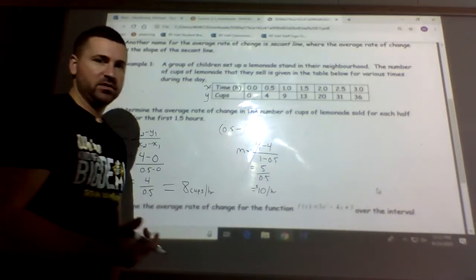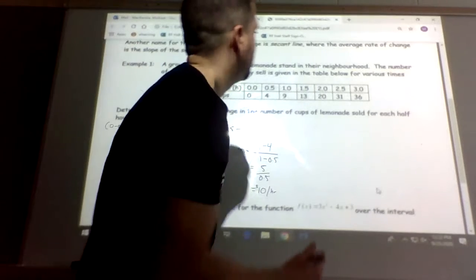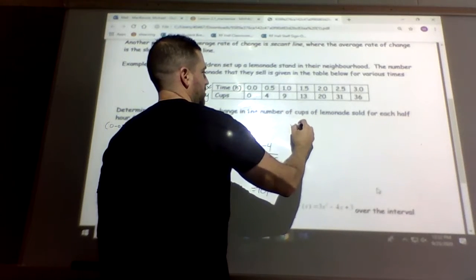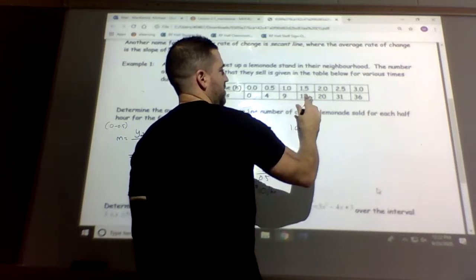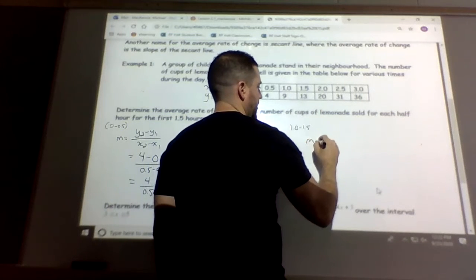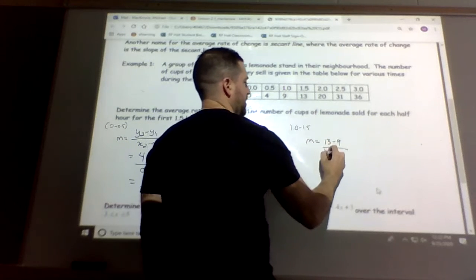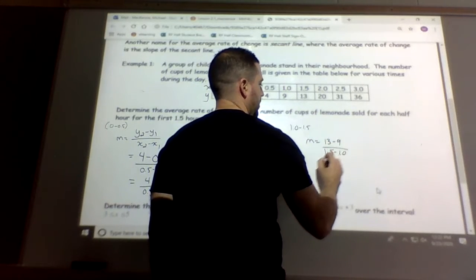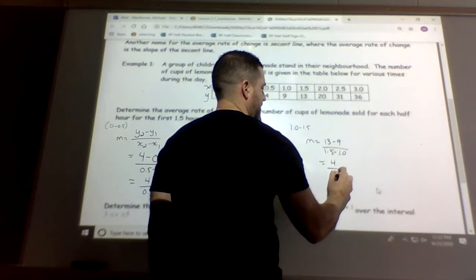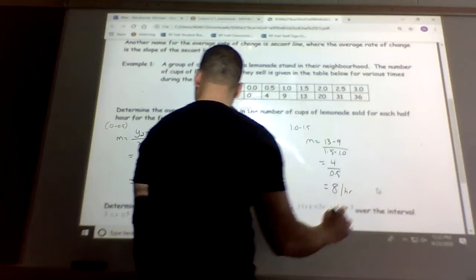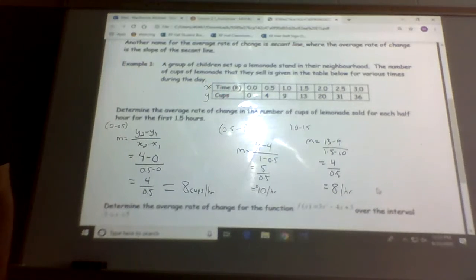So 10 per hour for lemonade. And now the last one, you probably see it through there. It's the last one from 1 to 1 and a half. So we have 13 minus 9, and then 1 and a half minus 1, which gives you 4 over 0.5, which again is 8 cups per hour.